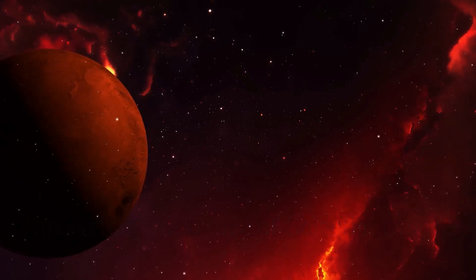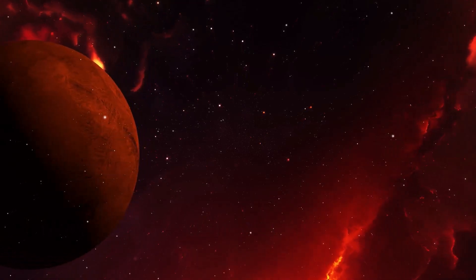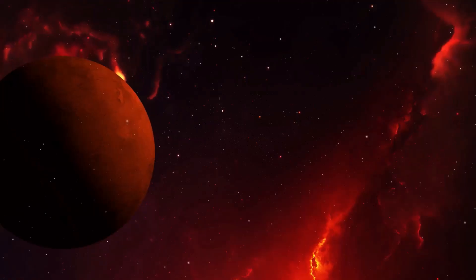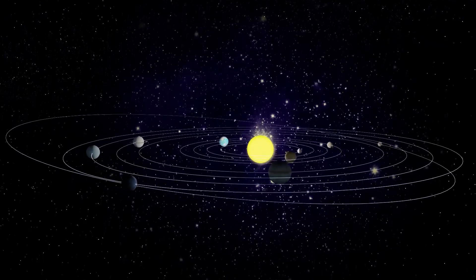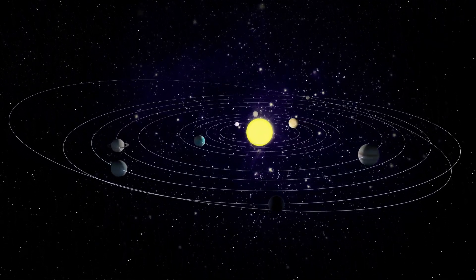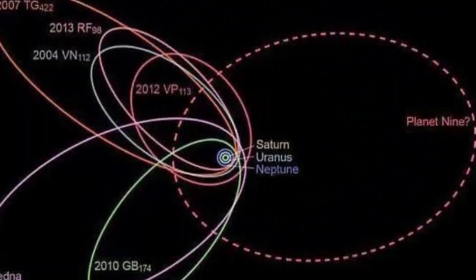The discovery of Planet Nine hinges not on direct observation, but on the subtle gravitational influence it exerts on other celestial objects. This concept, known as celestial mechanics, is the study of the motions of celestial objects under the influence of gravity.